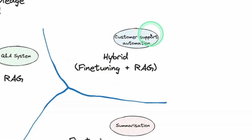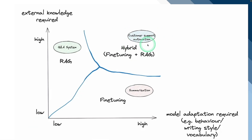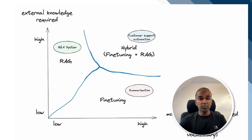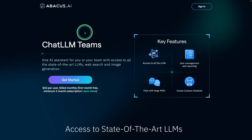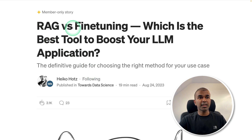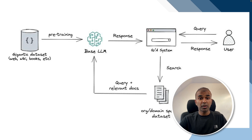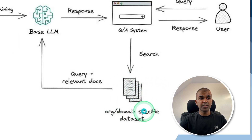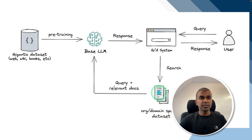Is there any way to simplify this without worrying about RAG and fine-tuning terminology? There is a solution — Abacus AI ChatLLM for Teams. Looking at RAG behind the scenes: the user asks a question to the QA system, which searches for relevant information in the database — your organization-specific or domain-specific dataset. Those relevant pieces of information are sent to the large language model as context, and then the AI sends a response back. That's how the user gets the correct answer. That is RAG behind the scenes.